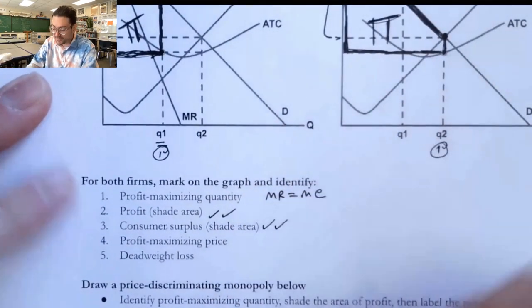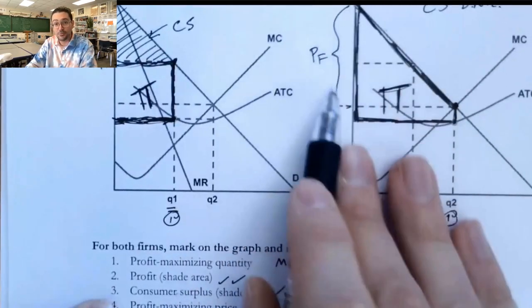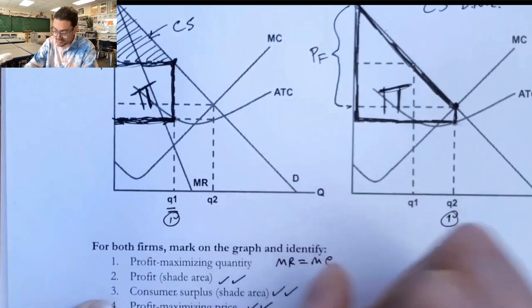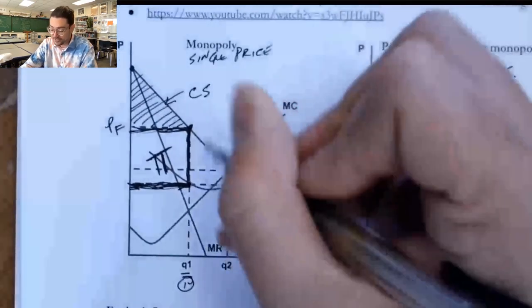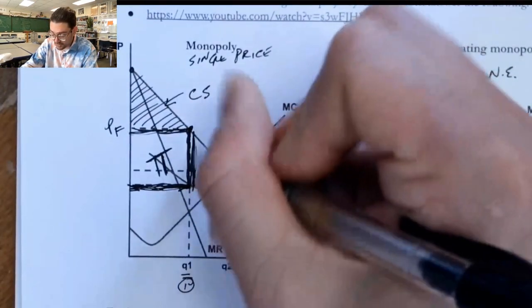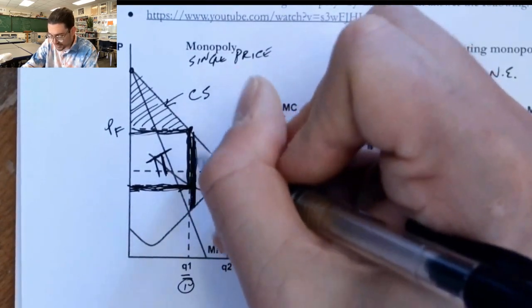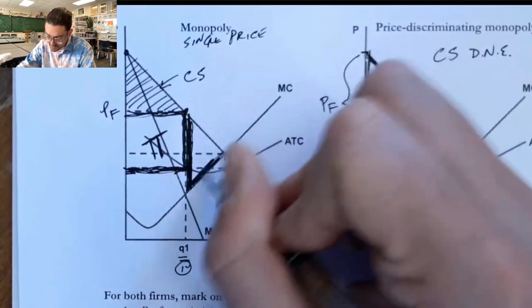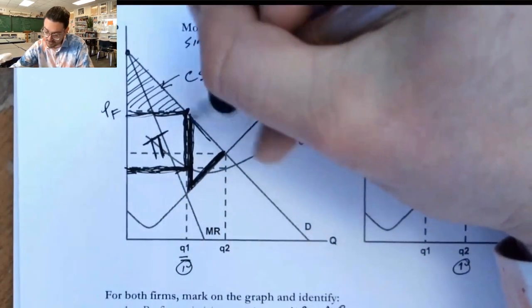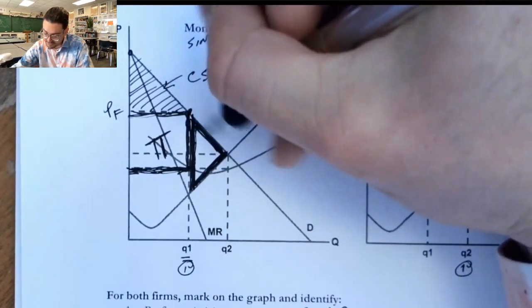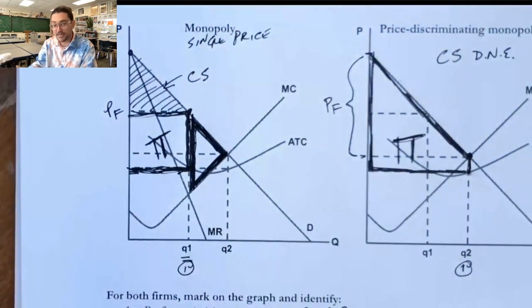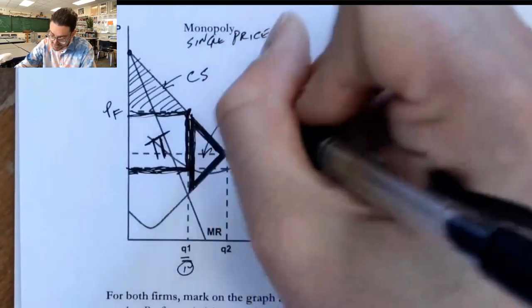Now, we've done consumer surplus for both. Profit maximizing price, we actually did that already. PF here. And then we have a range of prices here. And then deadweight loss. Well, we know deadweight loss is here from the quantity that we're producing, up the marginal cost curve and down along that demand curve, because it's the lost value of transactions that are not happening because this market is inefficient.